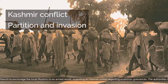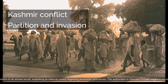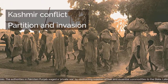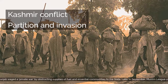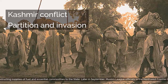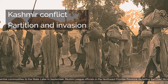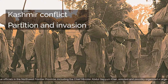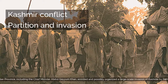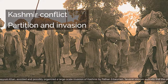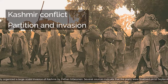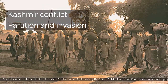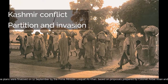The authorities in Pakistani Punjab waged a private war by obstructing supplies of fuel and essential commodities to the state. Later in September, Muslim League officials in the Northwest Frontier Province, including Chief Minister Abdul Qayyum Khan, assisted and possibly organized a large-scale invasion of Kashmir by Pashtun tribesmen. Several sources indicate that the plans were finalized on 12 September by Prime Minister Liaquat Ali Khan, based on proposals prepared by Colonel Akbar Khan and Sardar Shaukat Hyat Khan. One plan called for organizing an armed insurgency in the western districts, and the other for organizing a Pashtun tribal invasion. Both were set in motion.